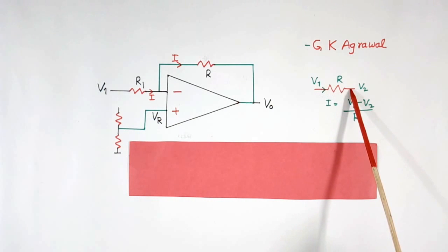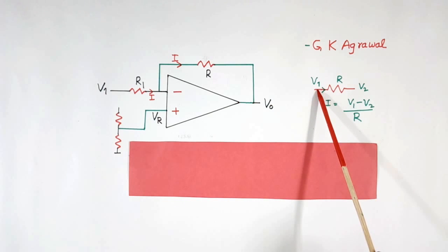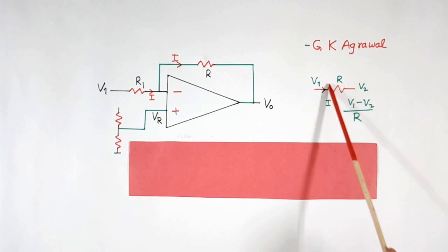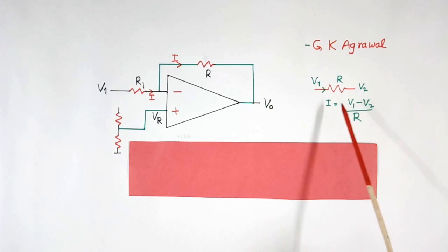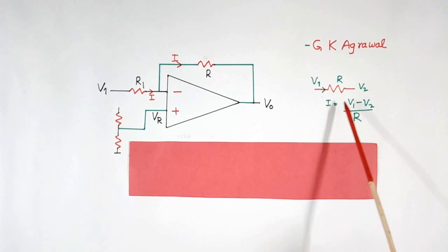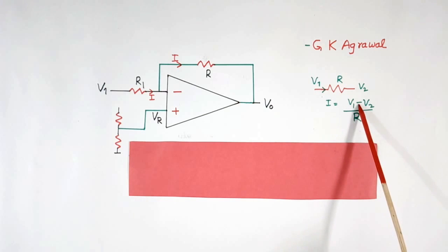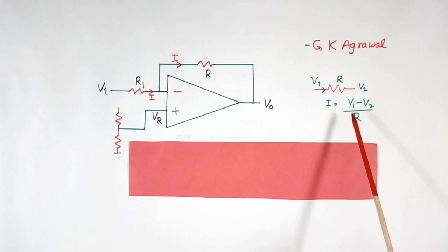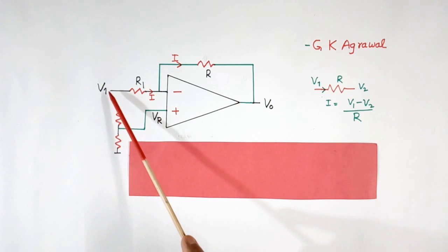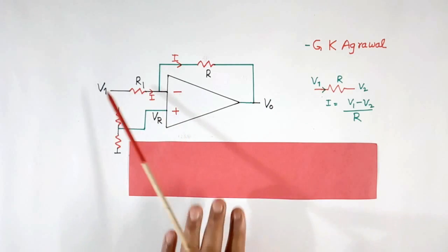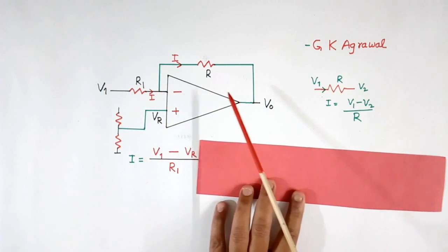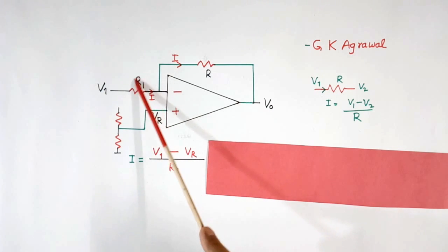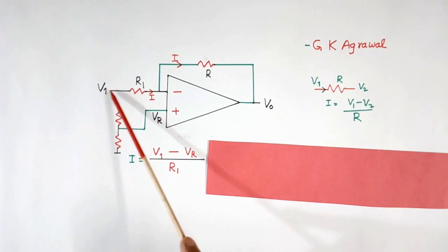Suppose there is a resistor with voltage V1 at one end and V2 at the other end. The voltage difference across this resistor is V1 minus V2, and the current flowing through it equals (V1 minus V2) divided by R, as per Ohm's law. Using the same method, the current flowing through the input resistor R1 equals V1 minus Vr, divided by R1.